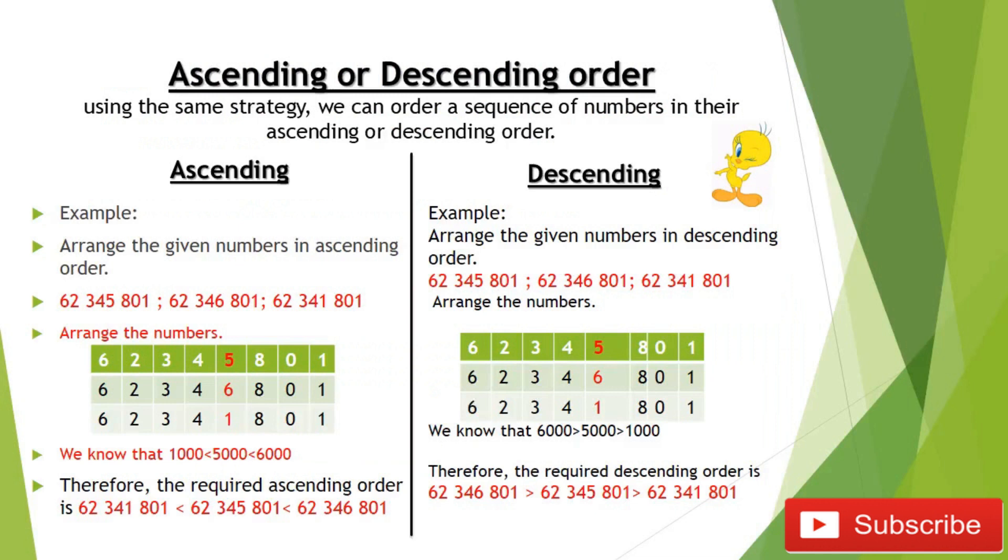Now the next slide shows ascending or descending order. Using the same strategy, we can order a sequence of numbers in ascending or descending order. Ascending means arrange from the smallest to the largest number. Example: 5, 9, 13, 17 are arranged in ascending order. Let's see an example. We have three numbers: 62,345,801, 62,346,801, 62,341,801. Arrange the numbers. We put them in a chart. We have stated that 561, which is the thousand place values, is changing. For ascending, we have said it is smaller to greater. We know that 1000 is less than 5000, 5000 is less than 6000.